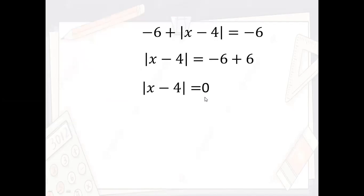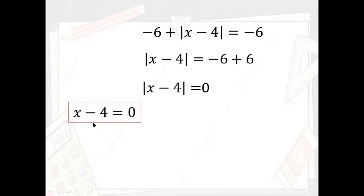When the absolute value expression equals zero, there is only one solution. Why? How can you ever say x minus four equals minus zero? There is no such thing as minus zero — zero is neither positive nor negative. So the only possibility is x minus four equals zero. Solving normally: x equals zero plus four, so x equals four. For equations where the absolute value equals zero, the answer is only one solution.